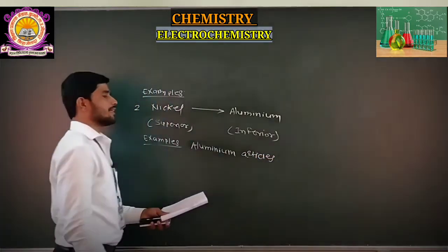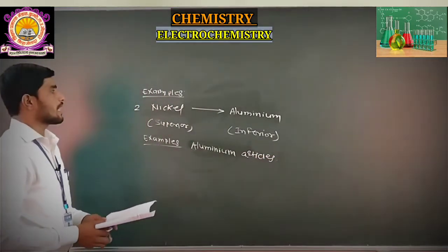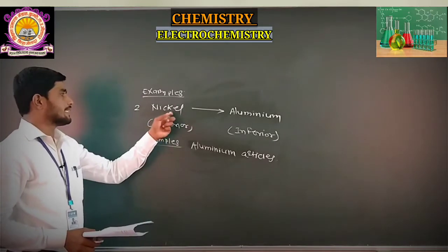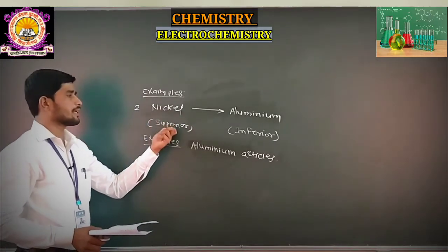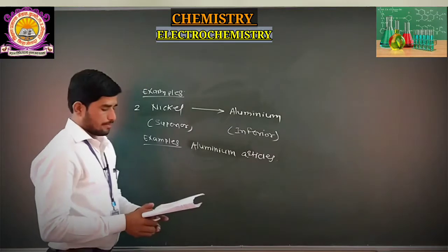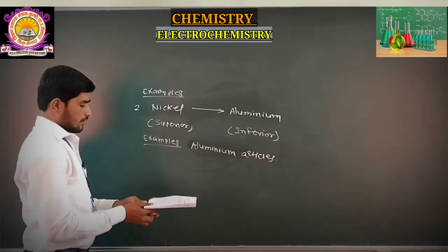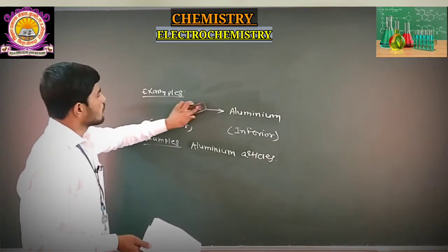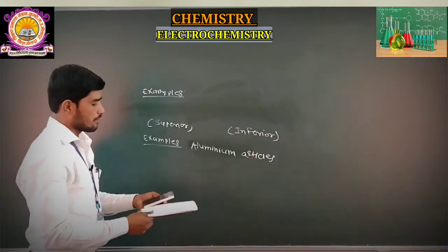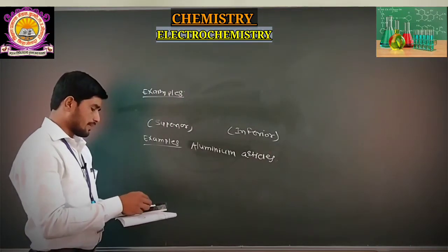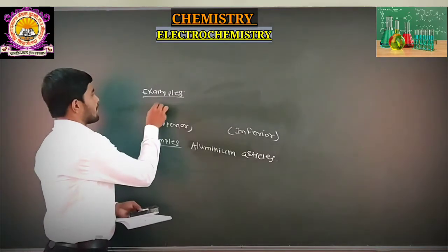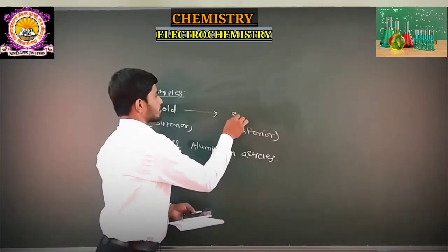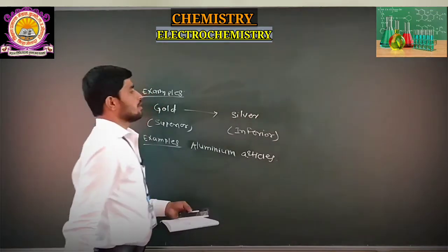The best example of nickel plating on aluminium is the different types of aluminium articles. Whatever articles are present in the market, most of the time these articles are plated by means of nickel, which is the superior metal as compared to aluminium.